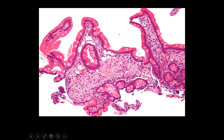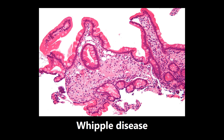This next one is super important — you'll probably see this on Step 1, Step 2, and beyond. This is a histology slide of Whipple's disease. What you're looking at are these enlarged foamy macrophages, which contain the causative organism Tropheryma whipplei. You will see these foamy macrophages in the lamina propria of the small intestine. Very important to know, and basically everything about this disease, because examinations love to test it.